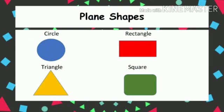What are plane shapes? There are four types of plane shapes: circle, rectangle, triangle, and square. A plane shape is also called a 2D shape because it has only width and length — it doesn't have height. That is why it is called a plane shape. It is simply flat on the surface.